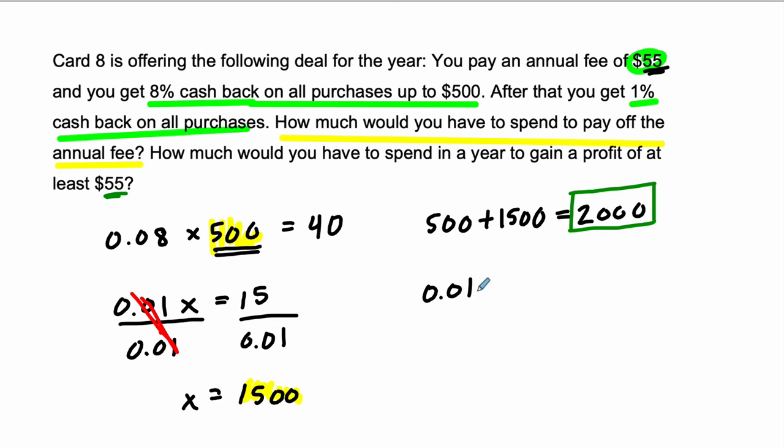Now, so that's going to be 0.01. It's all that 1% range, right? We've already spent the $500. We'll say times some amount Y. It has to be greater than or equal to $55 because we're trying to get at least that amount of money. And it's the same process. We divide by 0.01. And then these divide out.